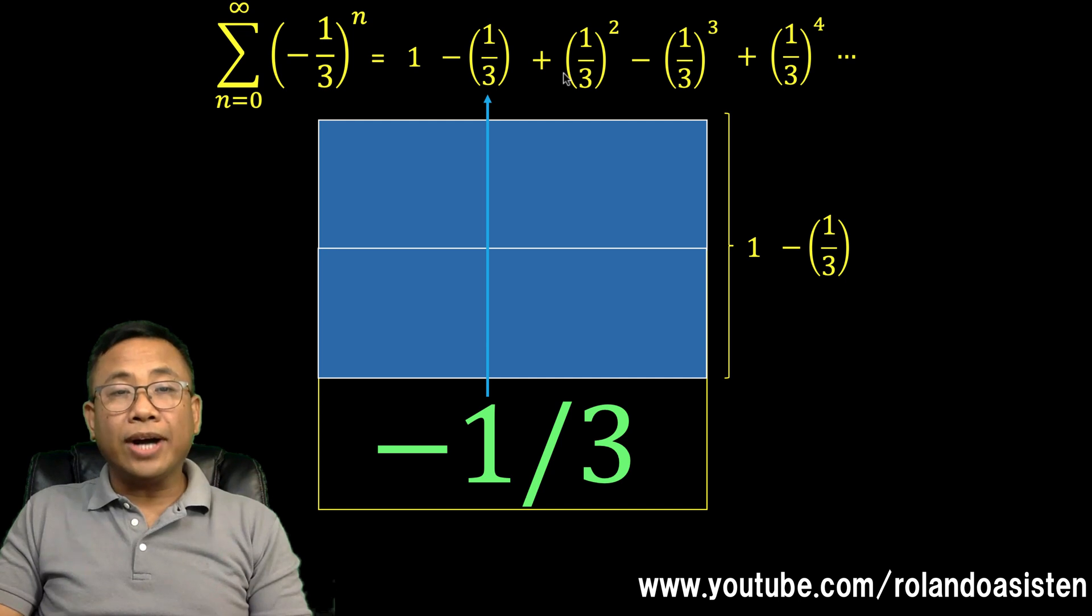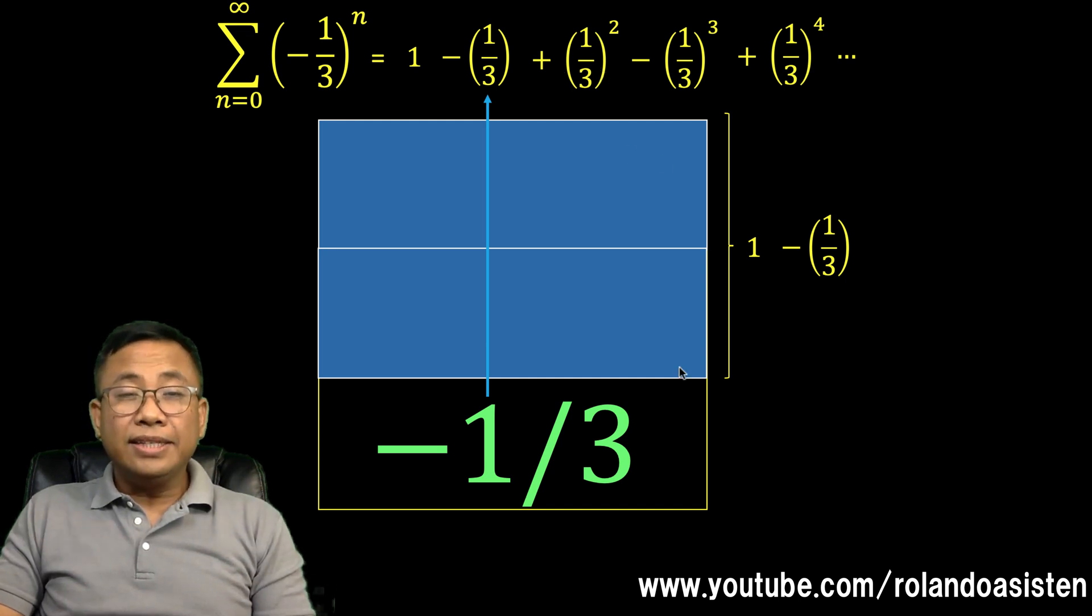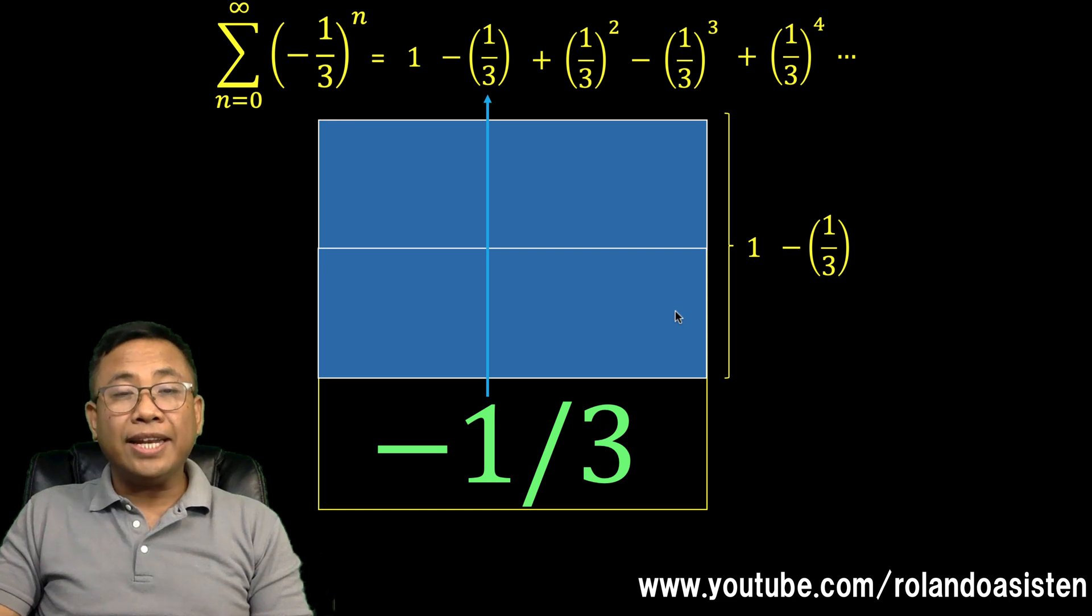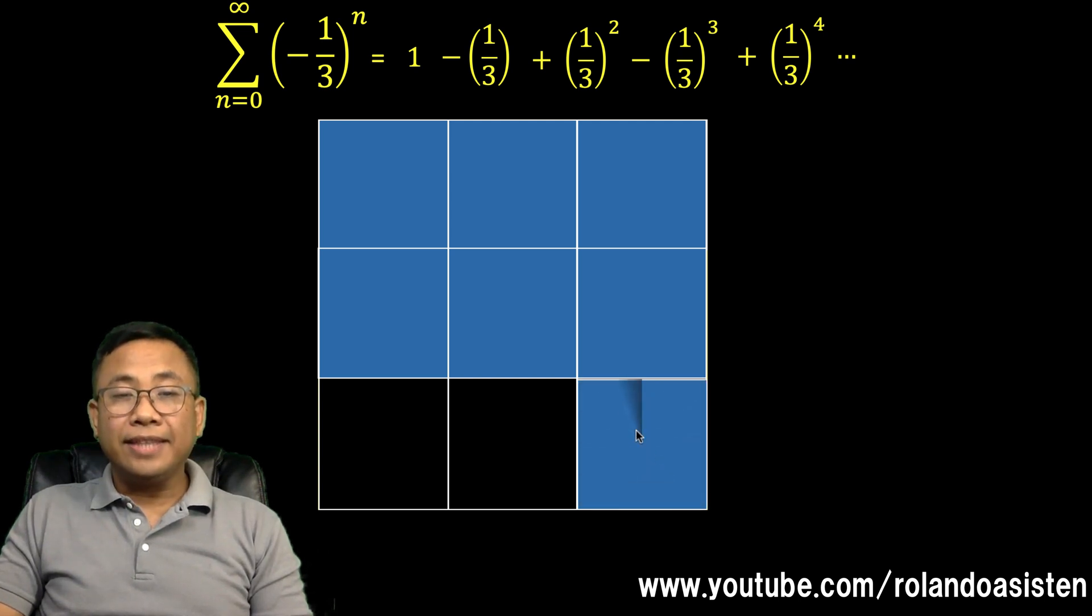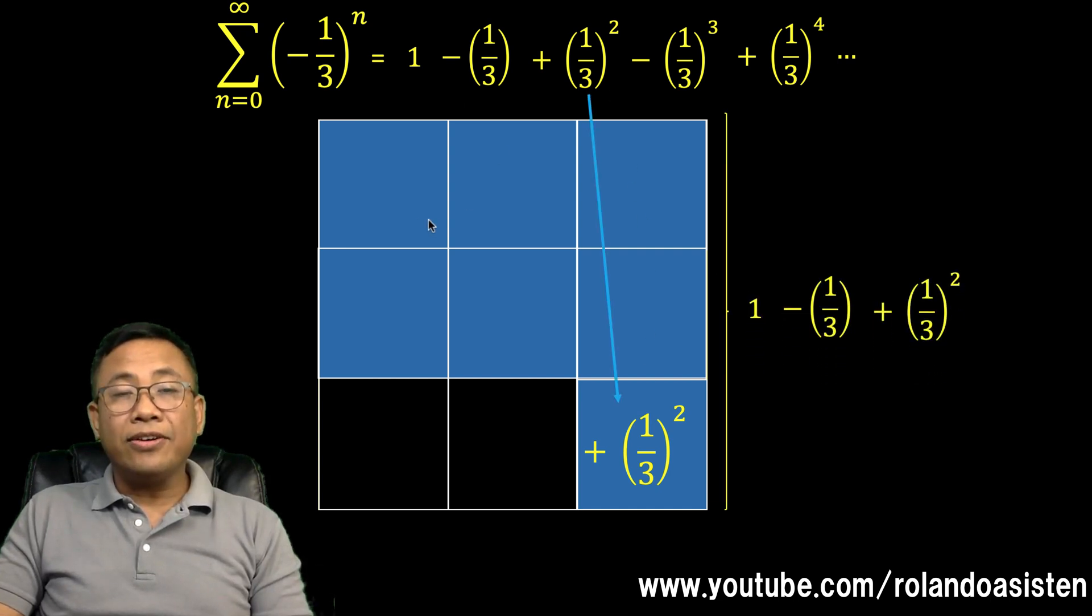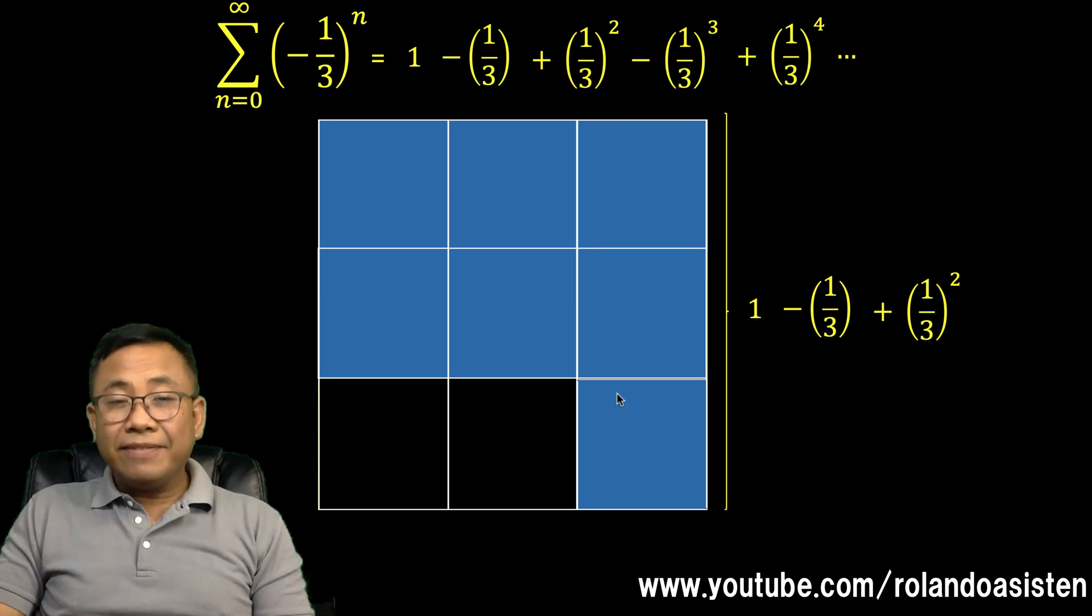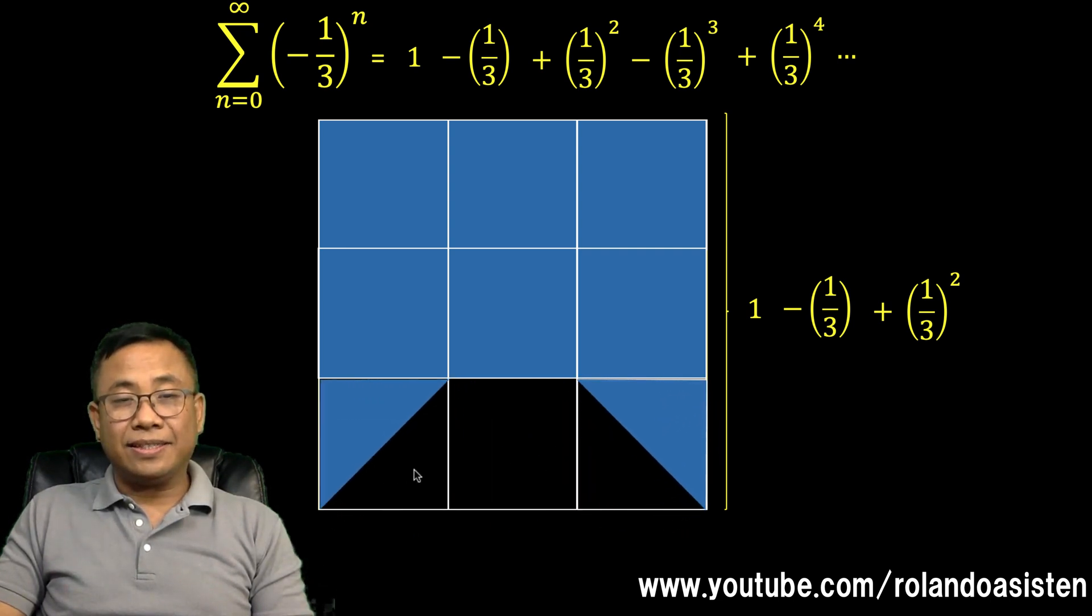Next, we are going to add (1/3)^2, or 1/9. So let's divide the whole into nine equal parts. We are going to add 1/9, so let's add one of these smaller squares. This is 1/9, which is the third term. Notice that the first three terms of the series is now represented by these blue parts. We started with one whole, subtracted 1/3, and added (1/3)^2. Now, let's divide this small square into two equal parts and spread those parts like this. The area is still 1 - 1/3 + (1/3)^2.